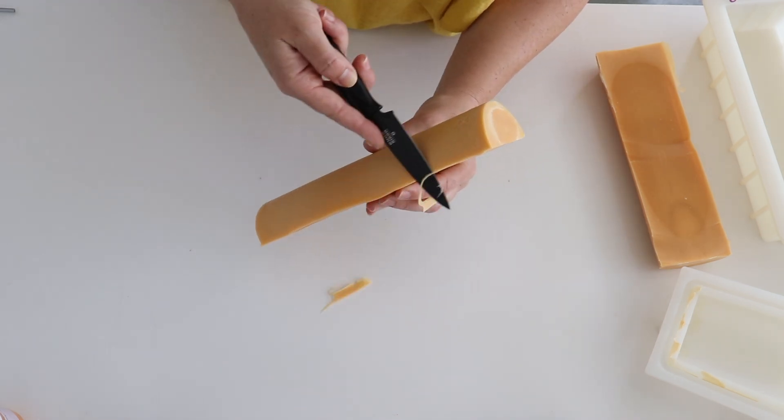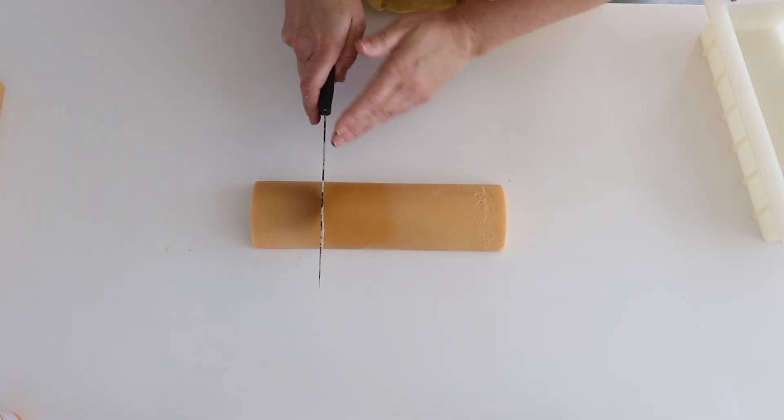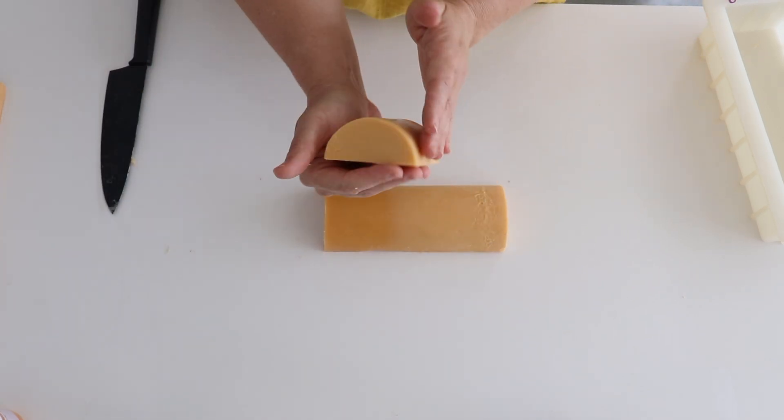I use a small knife just to clean up the edges. And then with the extra soap you can make these cute little half cylinder bars if you want.